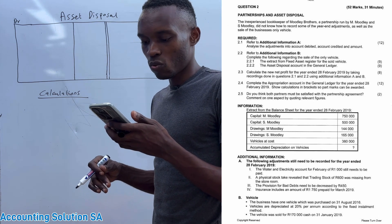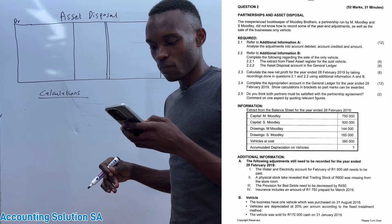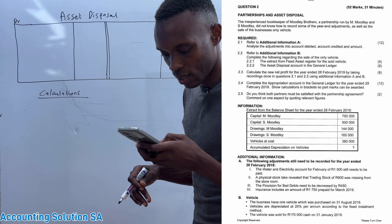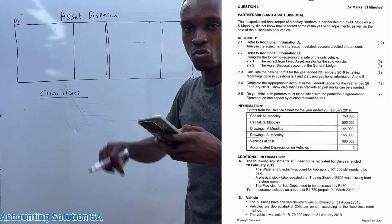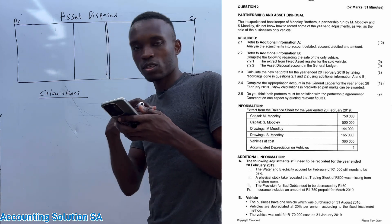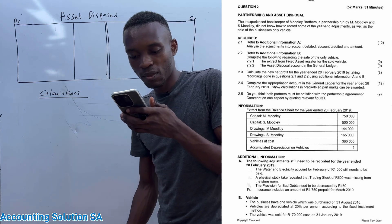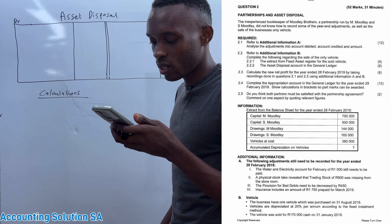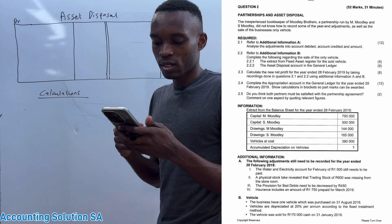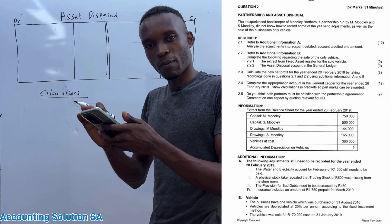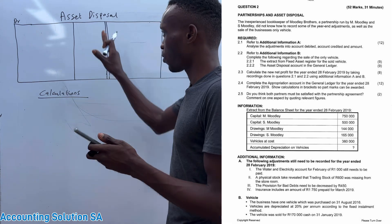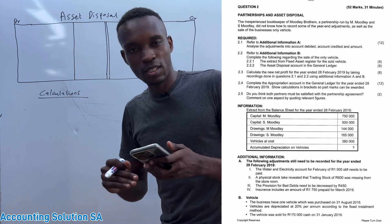Question 2.2.1 says: complete the following regarding the sale of the vehicle — that's nine marks to prepare. Nine marks is a lot. The information gives us an extract from the balance sheet for the year ended 28 February 2019, with capital amounts and drawings for two partners. That information will be used when we prepare the appropriation account and current account, but for this question we are only looking for information related to assets disposal.